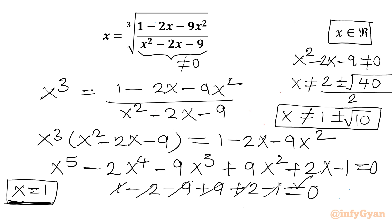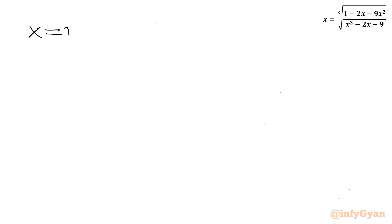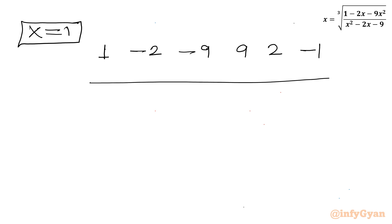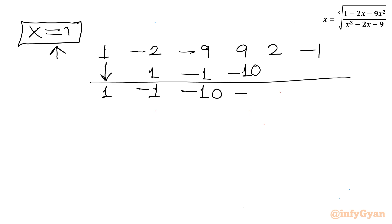Let us write all the coefficients of this quintic equation and use synthetic division with base solution x = 1. Coefficients: 1, minus 2, minus 9, 9, 2, minus 1. Carrying out the synthetic division gives us coefficients 1, minus 1, minus 10, minus 1, 1 with remainder 0.